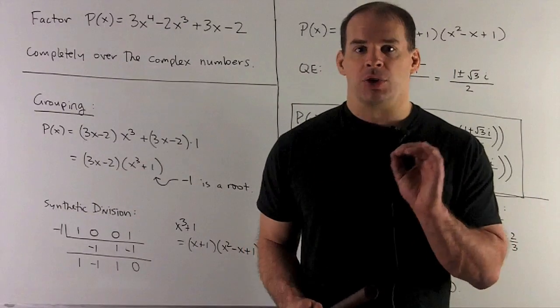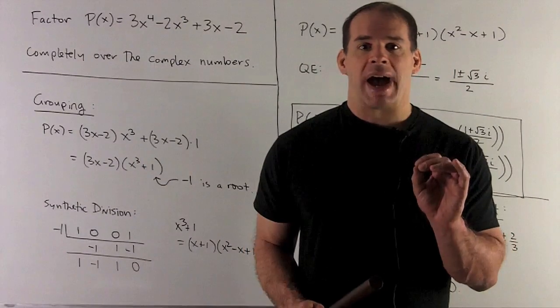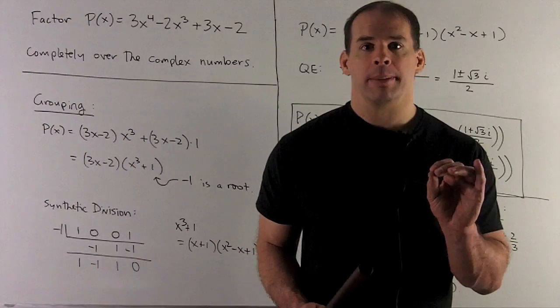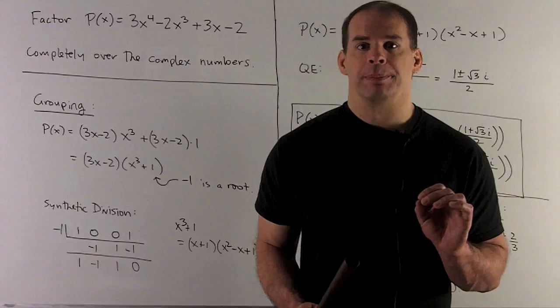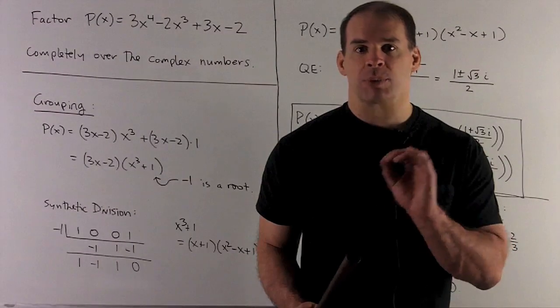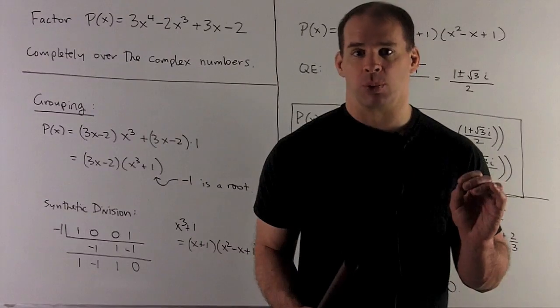Now, factoring x^3 + 1, we could try to take some simple numbers. So of course, you try 0, 1, minus 1. Minus 1 is going to be a hit. So that means x - (-1) or x + 1 divides into x^3 + 1.